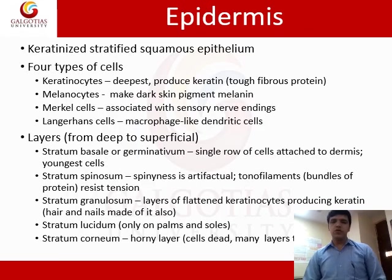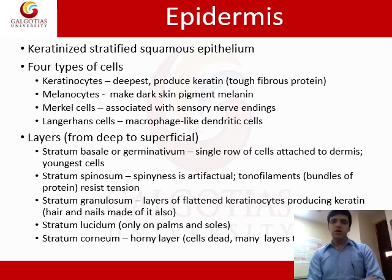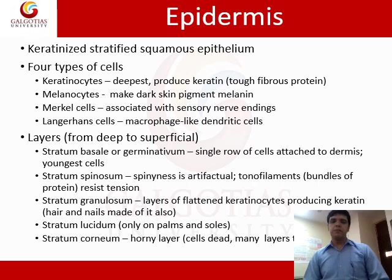The outermost layer of skin is known as the epidermis, which is formed by keratinized stratified squamous epithelium cells. There are four types of cells present in the epidermis: keratinocytes, melanocytes, Merkel cells, and Langerhans cells.